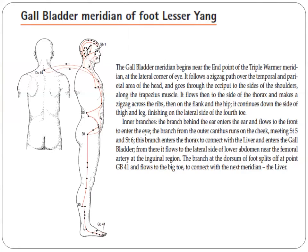The gallbladder meridian of foot Xiaoyang, or foot lesser yang, begins near the endpoint of the triple warmer meridian at the lateral corner of the eye. It follows a zigzag path over the temporal and parietal area of the head and goes through the occiput to the sides of the shoulders along the trapezius muscle. It flows then to the side of the thorax and makes a zigzag across the ribs, then on the flank and the hip. It continues down the side of the thigh and leg, finishing on the lateral side of the fourth toe.